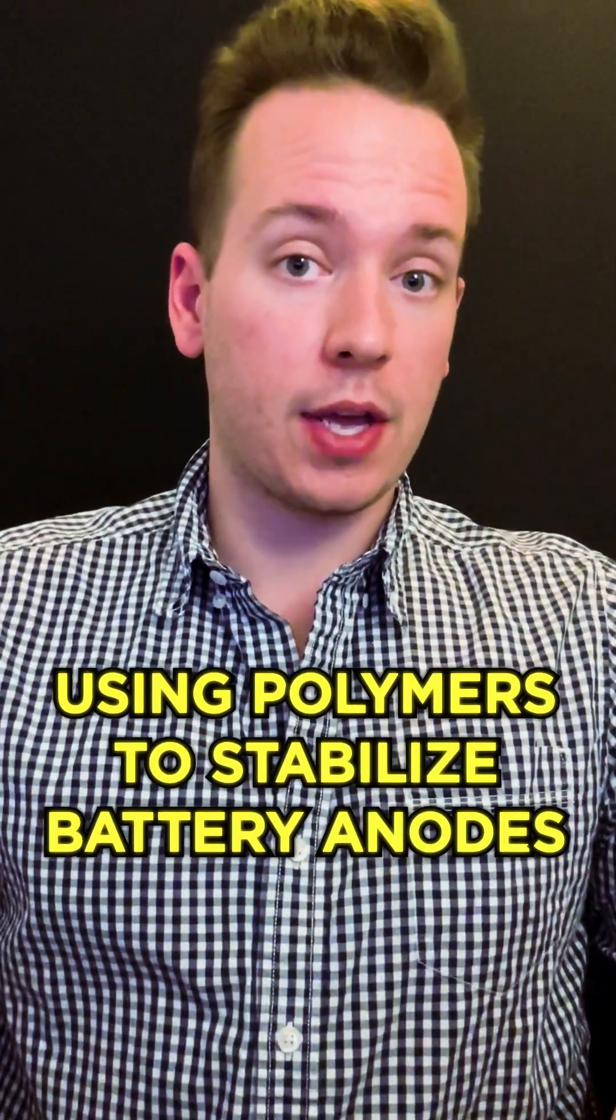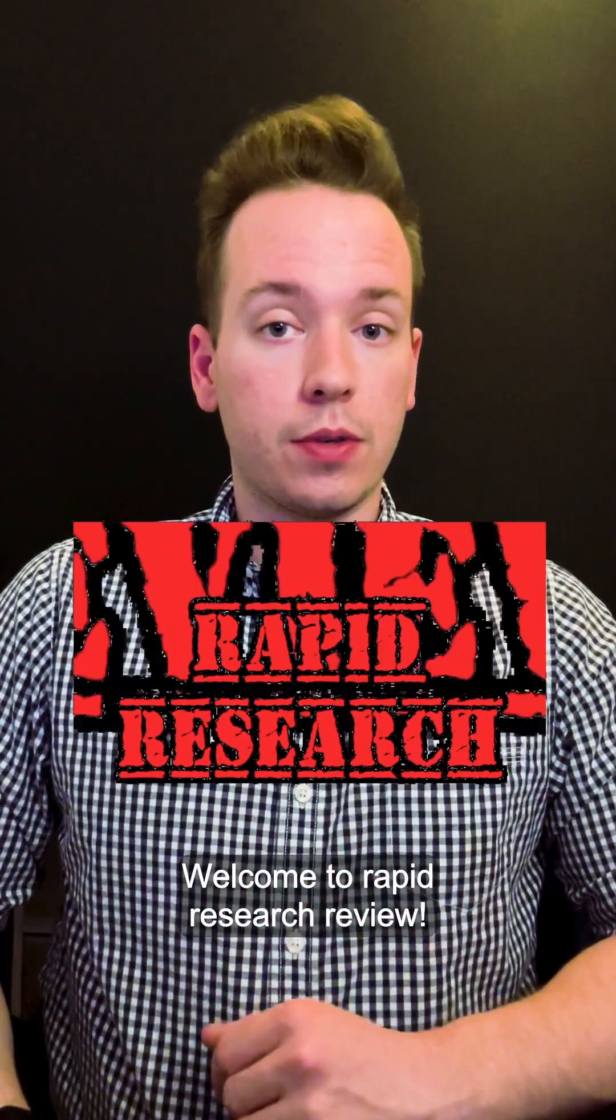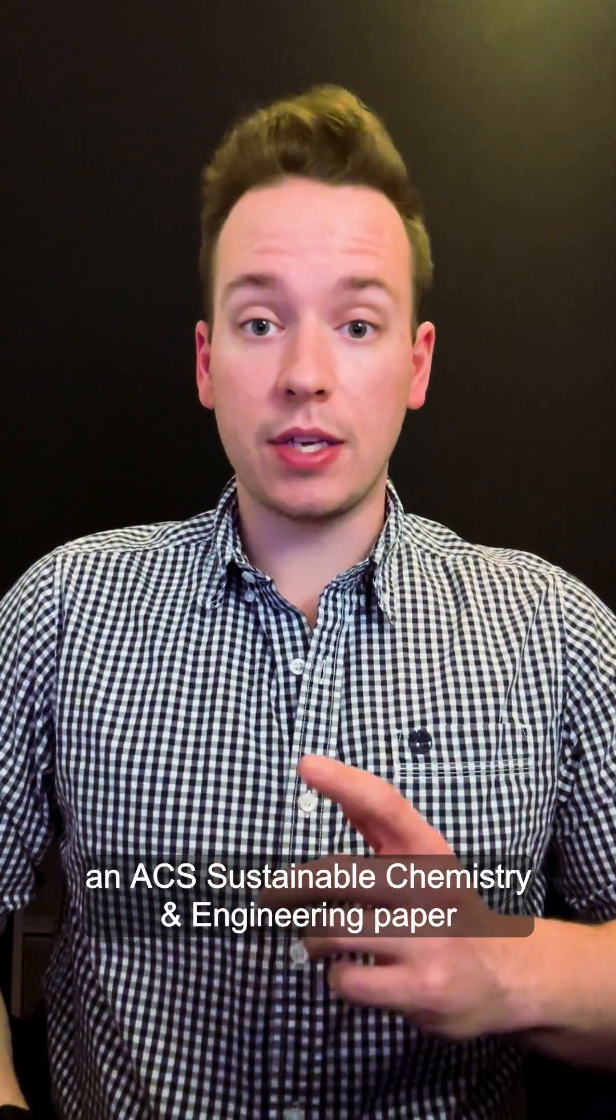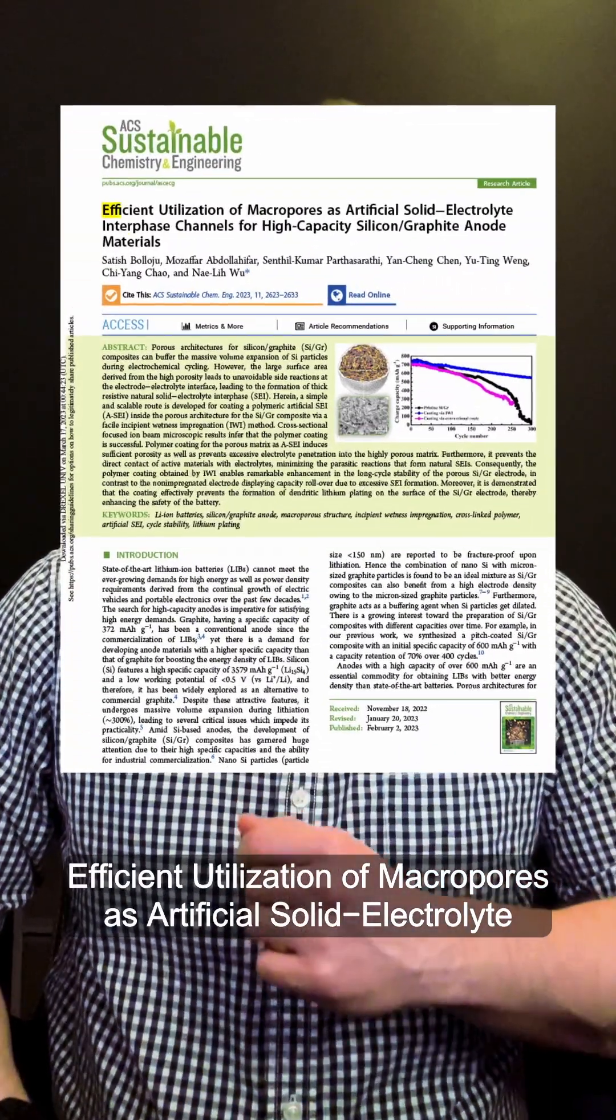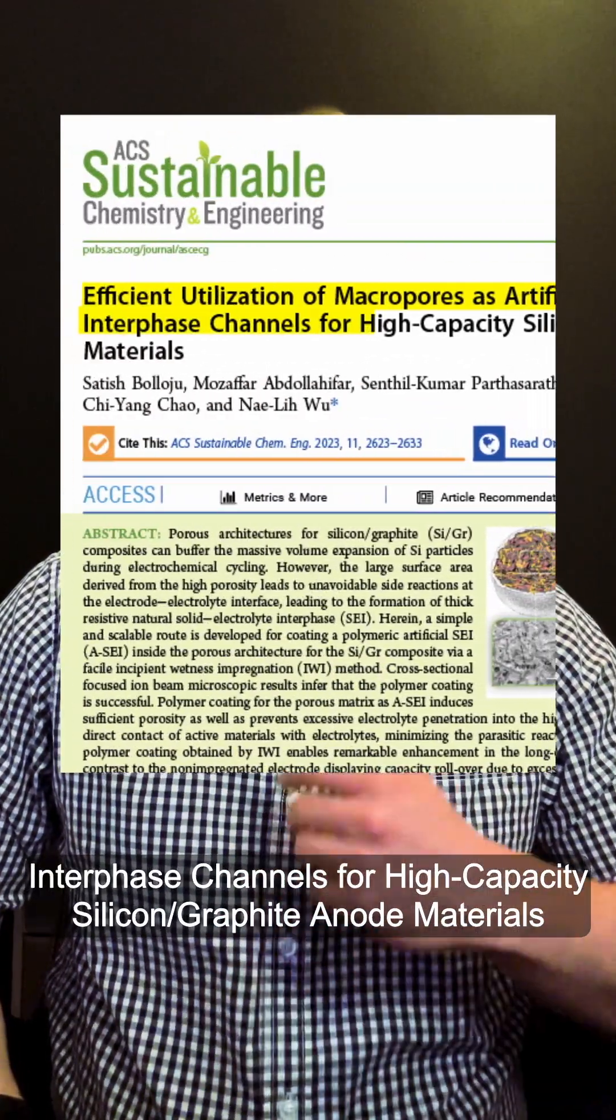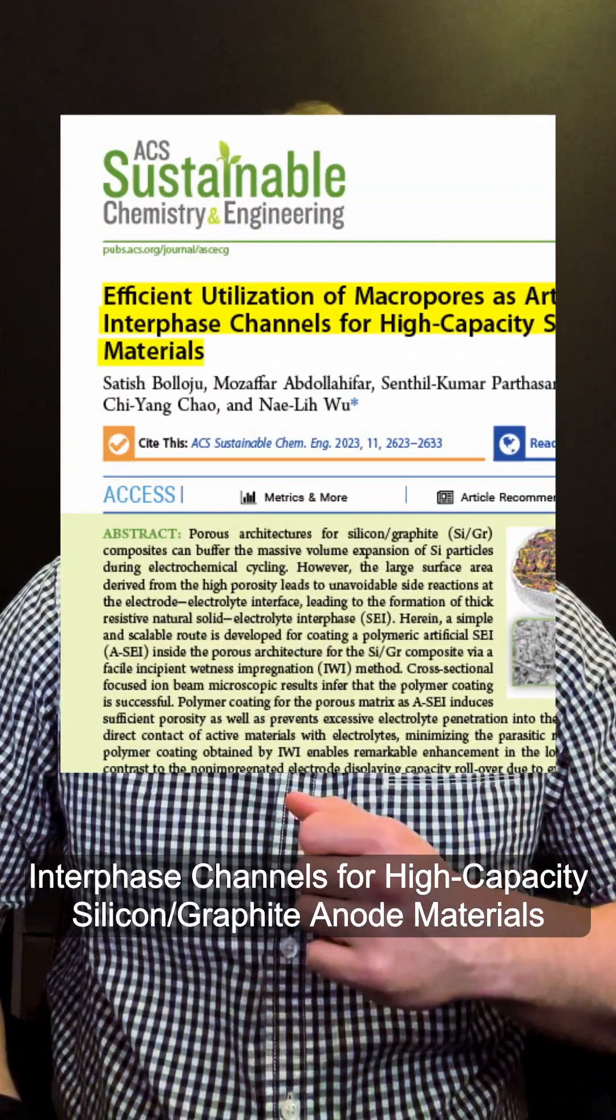Using polymers to stabilize battery anodes. Welcome to Rapid Research Review. Today we're covering one of your submitted papers, an ACS Sustainable Chemistry and Engineering paper from Boloji and colleagues titled Efficient Utilization of Macropores as Artificial Solid Electrolyte Interface Channels for High-Capacity Silicon Graphite Anode Materials.